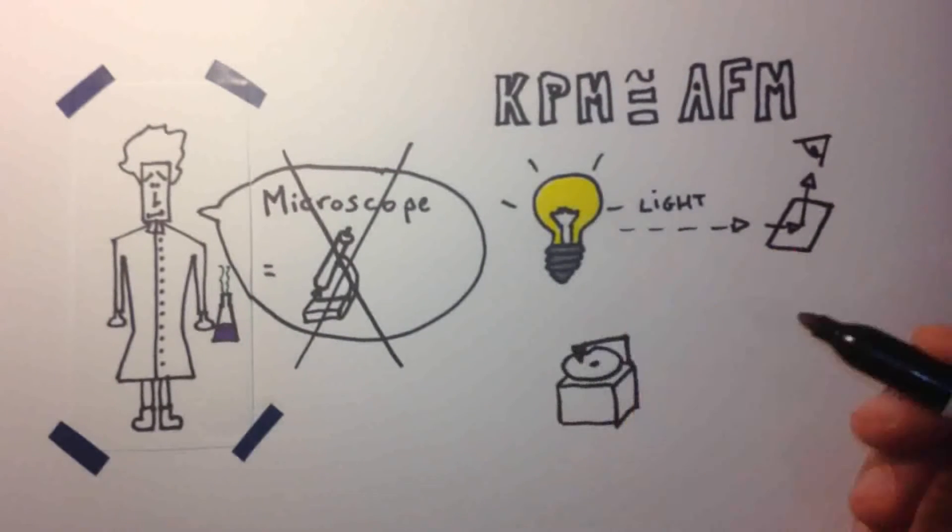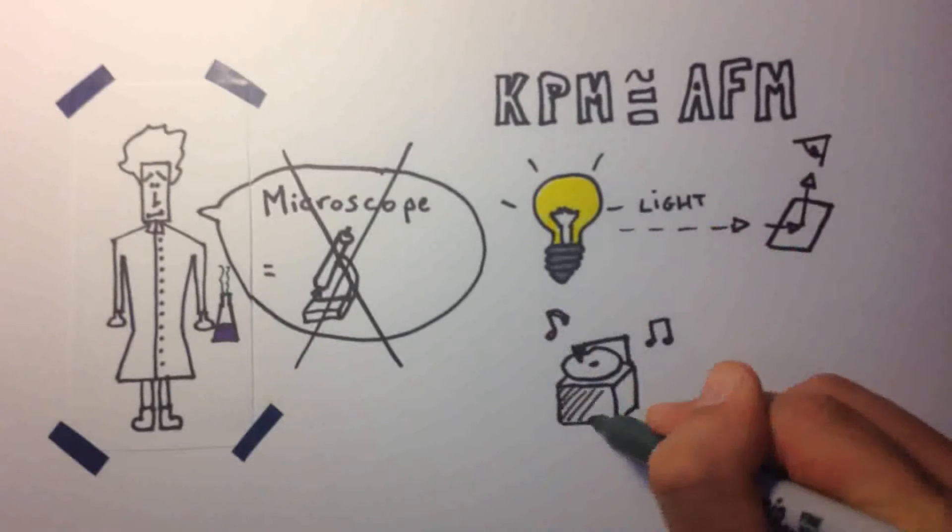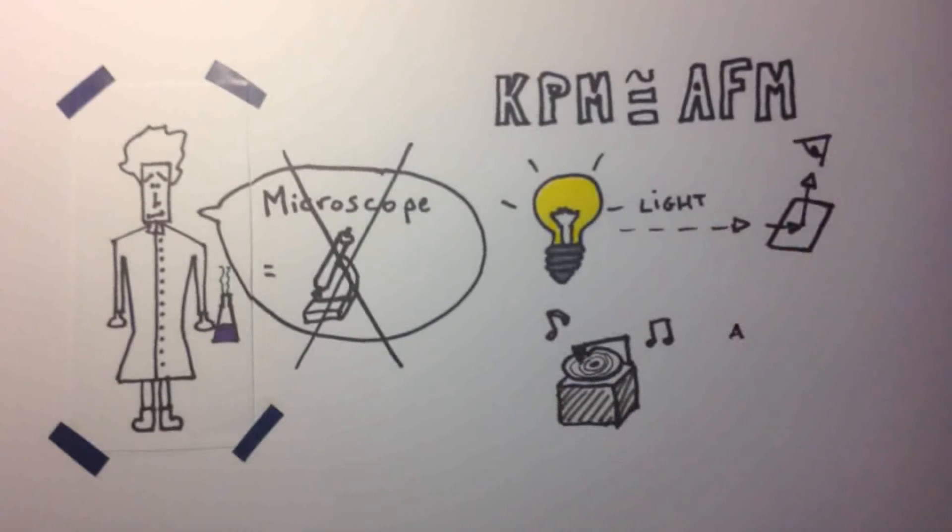AFM working principle is more similar to a LP player that reads vinyl, or to a blind man that reads braille with his fingers.